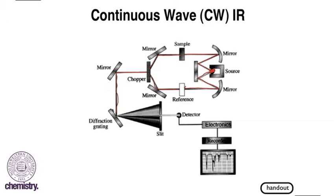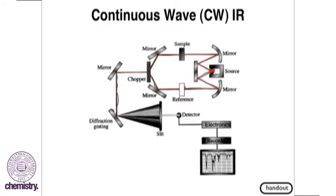In a CW-IR instrument, the diffraction grating is basically a series of filters. This is going to allow us to sample one wavelength at a time. We continuously vary the wavelengths we are analyzing with. That's where the name CW comes from.